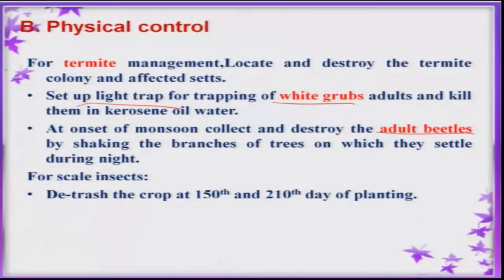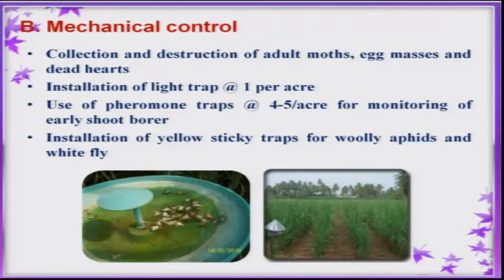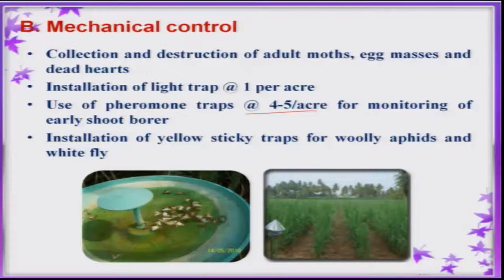Detrashing, especially at the 150th and 210th day after planting, helps in the reduction of the majority of sucking insect pests, especially woolly aphid and scale insects. Mechanical practices like collection of egg masses and destruction of affected plants can also be practiced. Installing light traps can attract many insect pests, especially beetles and some lepidopteran pests. Use pheromone traps for monitoring, and install yellow sticky traps to bring down populations of woolly aphids and whitefly.